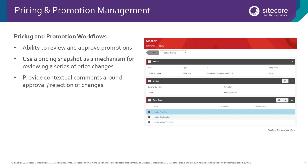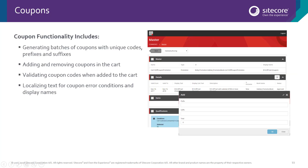On top of all that, the pricing and promotion functionality has workflow management built into it. This means that any new price cards or promotions have to be reviewed and approved before they're usable on the live site. What's more, you get contextual messaging around the approval and rejection. You can also create coupons in the site. These are tracked for you automatically, and you can also, out of the box, generate coupon batches with unique codes, prefixes, and suffixes.